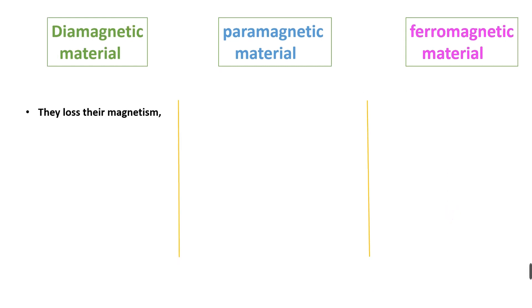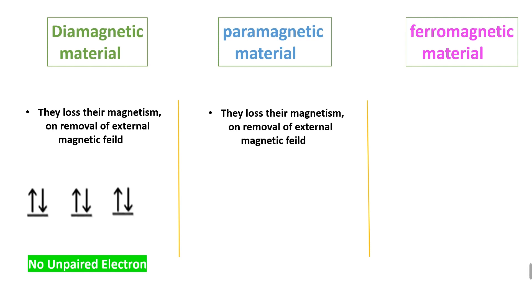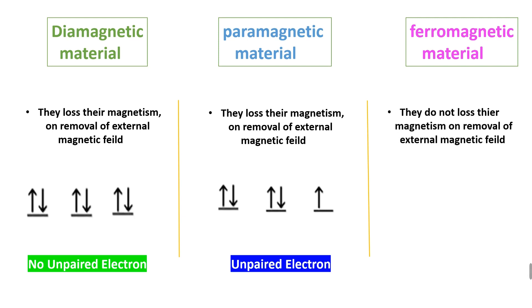Diamagnetic material loses its magnetism on removal of the external magnetic field and has unpaired electrons. While paramagnetic material also loses its magnetism on removal of the external magnetic field and has unpaired electrons. Ferromagnetic material does not lose its magnetism on removal of the external magnetic field, as they are permanent magnets.